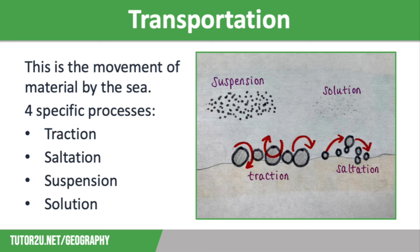Traction is where large rocks and boulders are rolled along the sea floor. We then have saltation, where small stones and pebbles are bounced along the sea floor. Moving on to suspension, where light material is held in suspension just below the sea surface — this is called suspended load. This is what often makes the sea look dirty, when actually it's not quite as polluted as we might think.